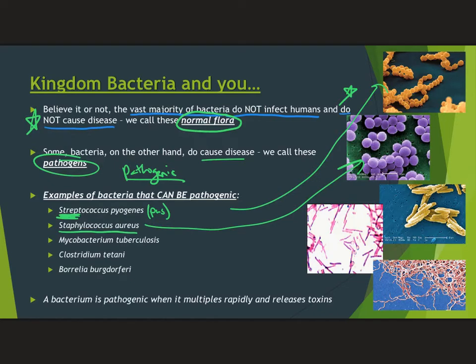Just realize that staph is on your body right now, and staph is typically responsible for something like an infected hair follicle. If you've ever had a little infected hair follicle on your arm — kind of like a little pimple on your arm or leg — that was probably a really minor staph infection, and then it just clears up and goes away.